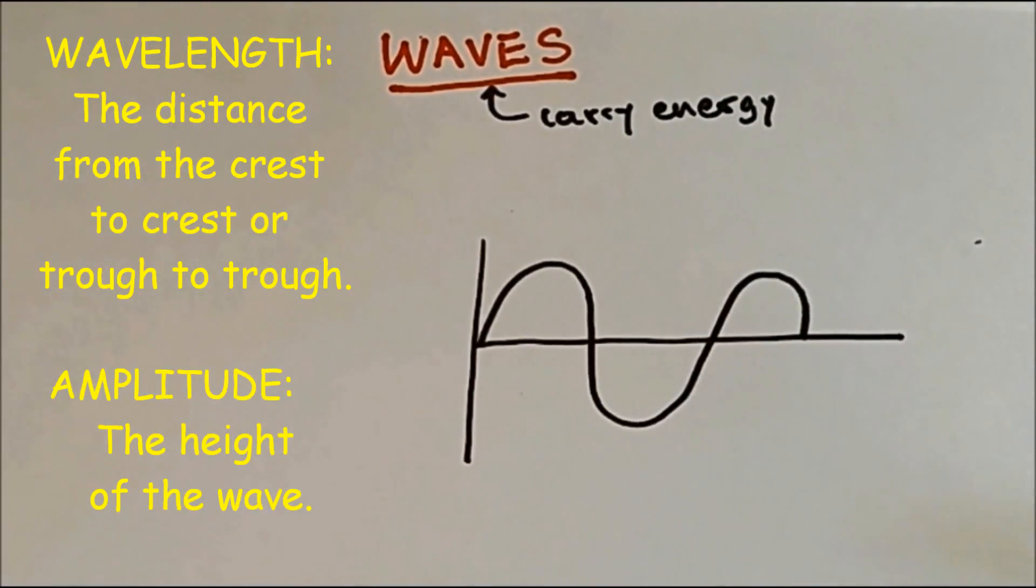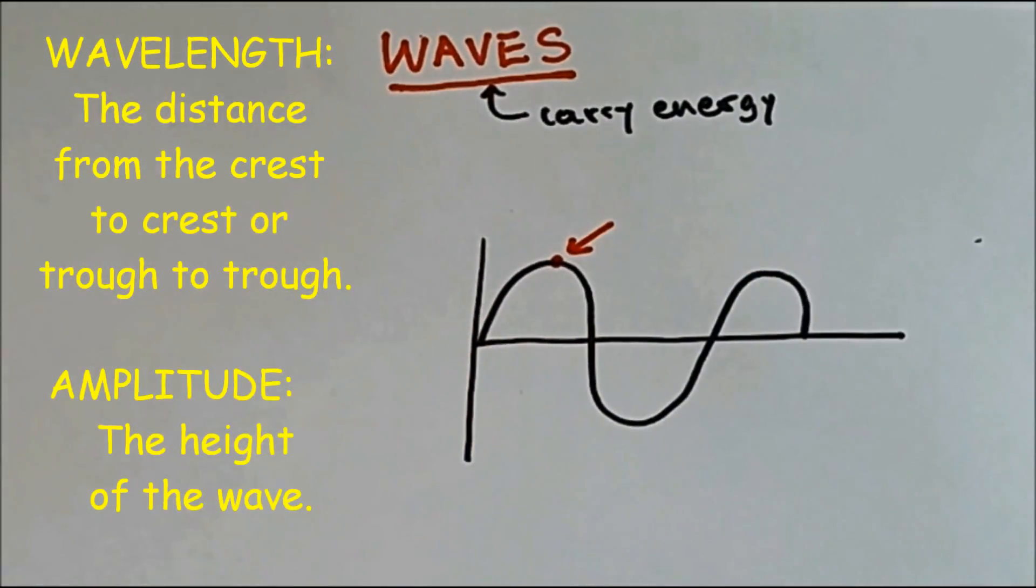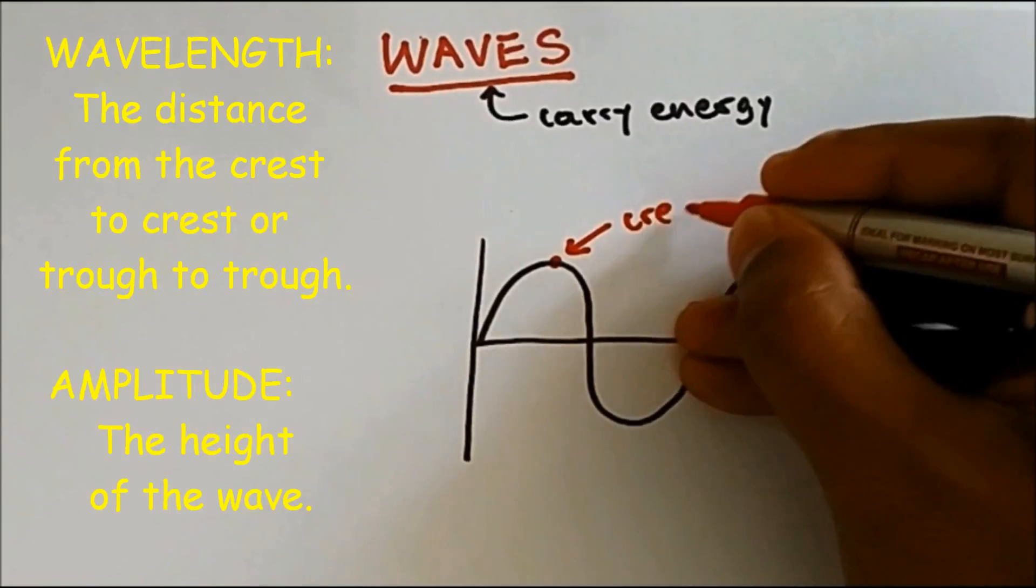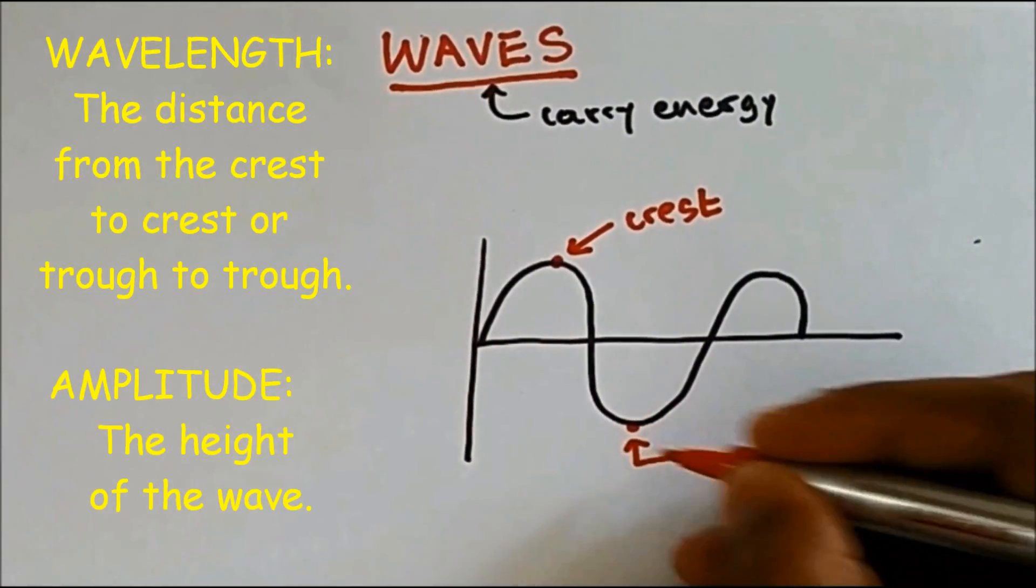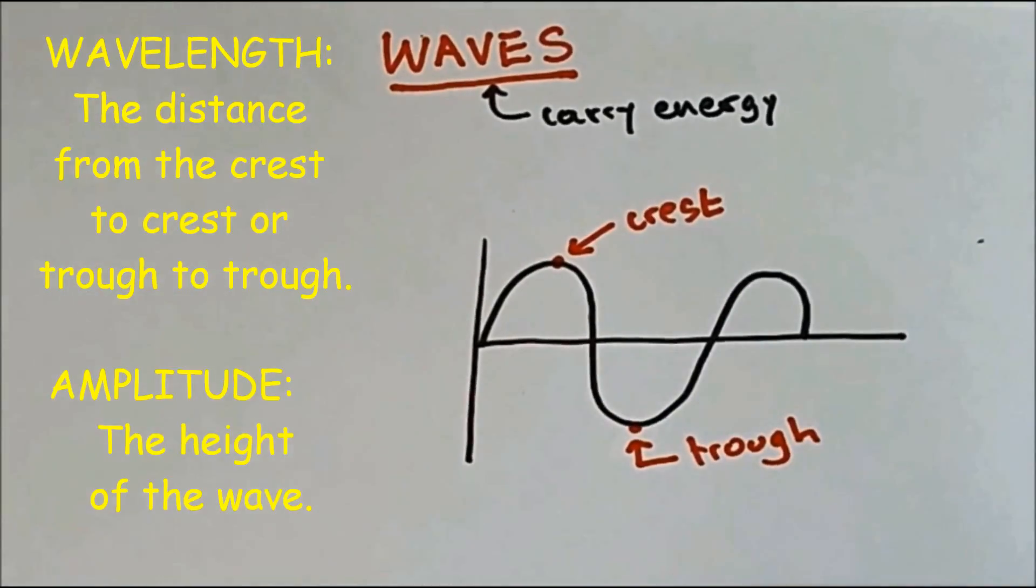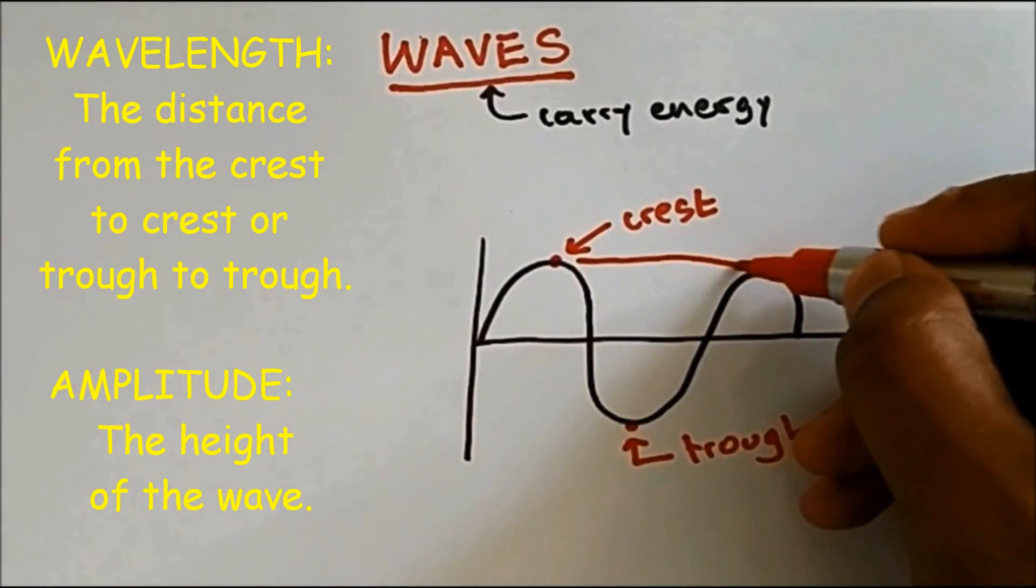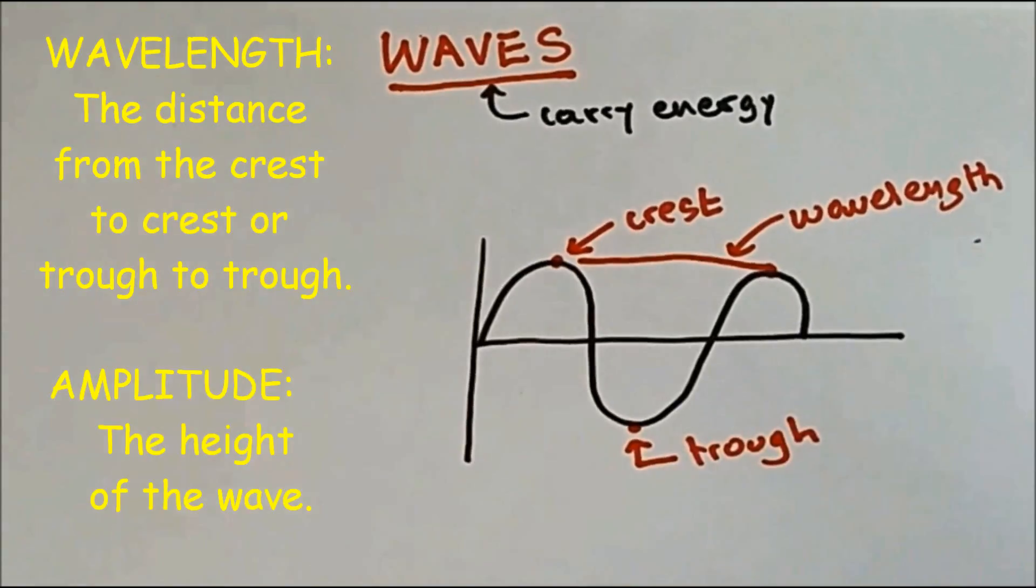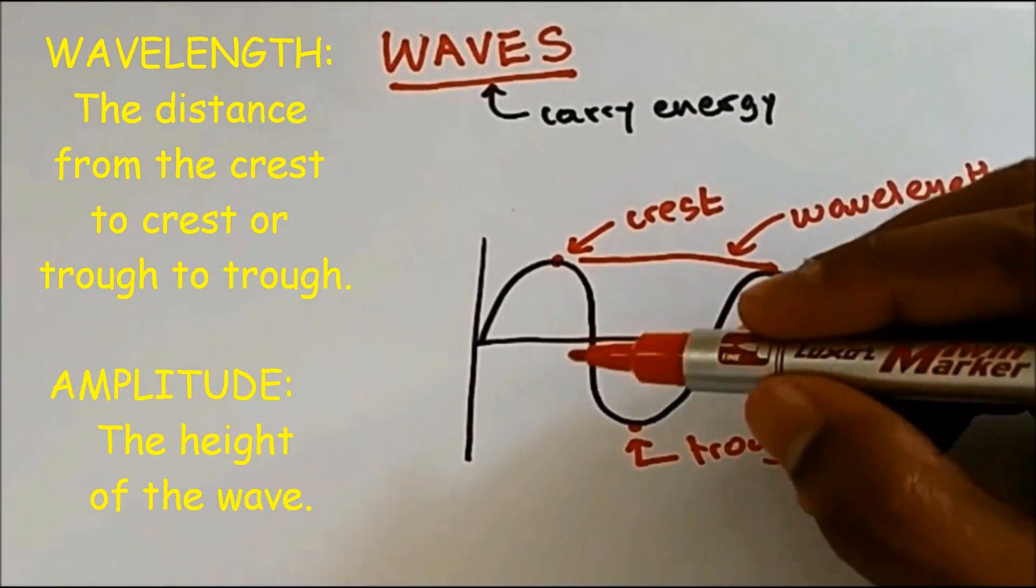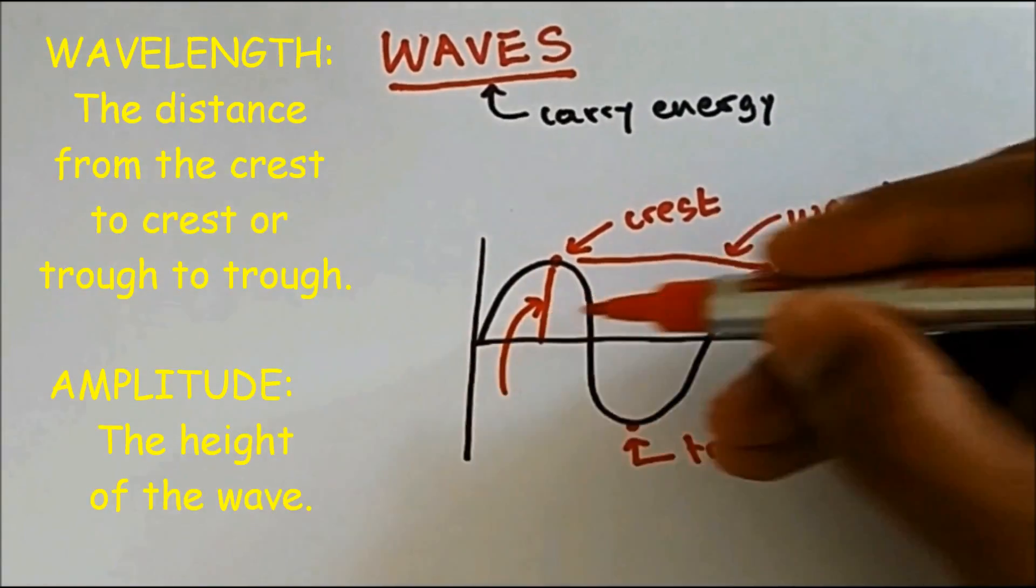You must have seen this diagram before. This is a typical structure of a wave. The peak on a wave is called a crest, and the bottom point is called a trough. The distance from one peak to the next is called a wavelength.